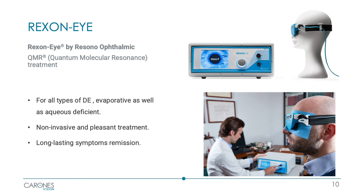Rexxon Eye is one of the latest devices available to treat dry eye disease. Rexxon Eye uses QMR technology to effectively treat all types of dry eye — hyposecretive and evaporative — by acting on both the lacrimal and meibomian glands. It is a non-invasive and well-tolerated technology, providing a comfortable treatment that allows a long and sometimes permanent reduction or resolution of symptoms.